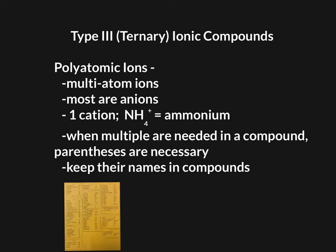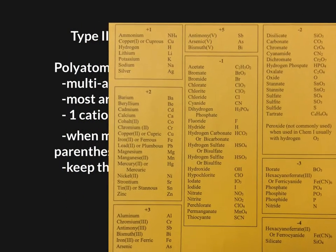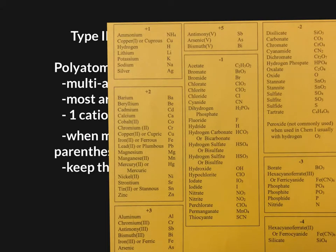The final thing to tell you is when we name ternary compounds, the polyatomic ions keep their names. So let's take a look at a few of them. You should have this now. And if you take a look here, you'll see that the ammonium ion is the only polyatomic cation. Everything else is a metal.